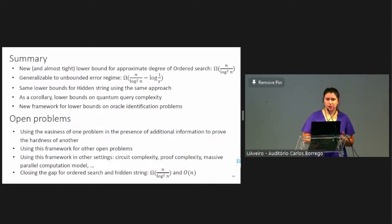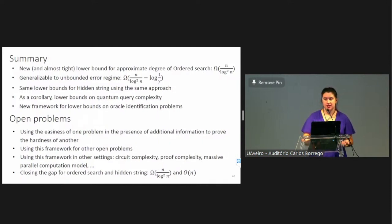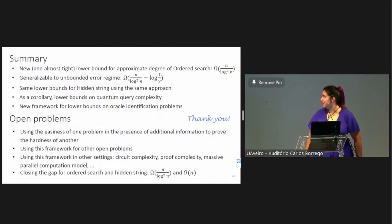A couple of open problems I want to highlight: first, is it possible to use the easiness of one problem in the presence of additional information to prove the hardness of another, as we did here, in some other way? Another problem is whether it's possible to use this framework for other open problems or in other settings. And the last one is to close the small gap that still exists for approximate degree and quantum query complexity of the decision versions of ordered search and hidden string. And that's it. Thank you for listening.